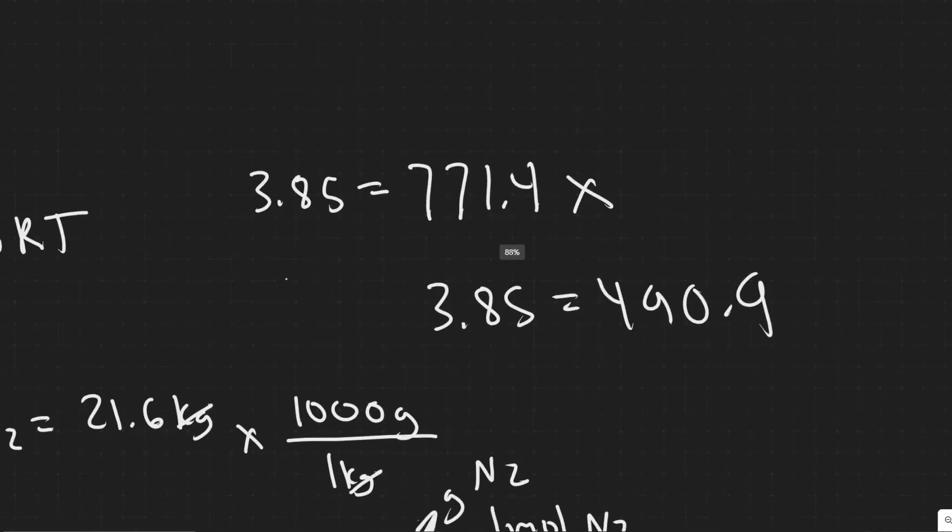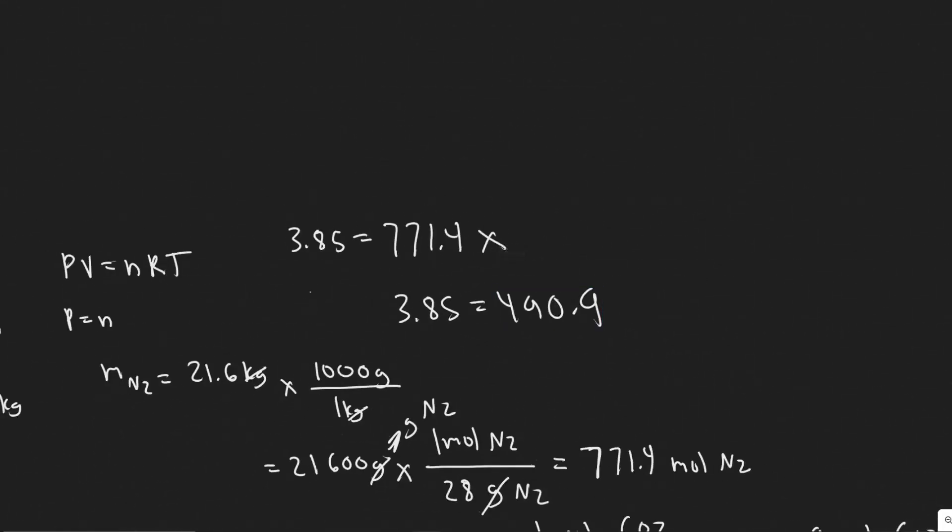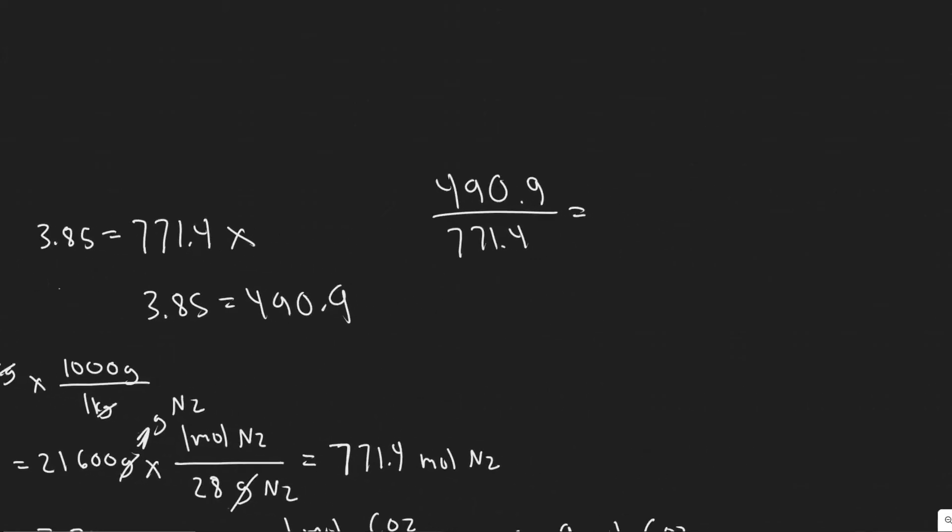Well, it's going to be at a ratio of moles of CO2. So basically, 490.9 over 771.4. That's what it's going to change by. So 3.85 times this is going to give us the change. And you can kind of imagine it in this way right here.